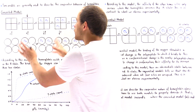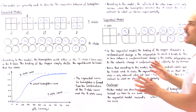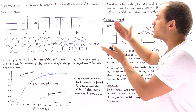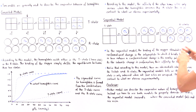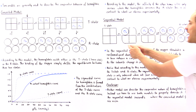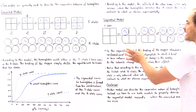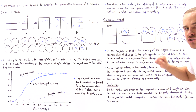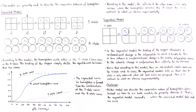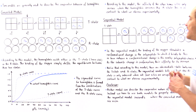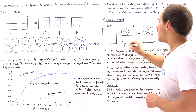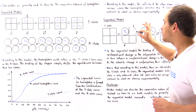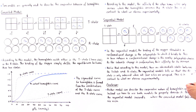The major difference between the concerted and sequential models is that in the concerted model we only have either the T state or the R state. But in the sequential model, we have the T state, the R state, and also three intermediates. The binding of oxygen stimulates a conformational change in that polypeptide, which in turn induces a conformational change in the nearby polypeptide chains, increasing the affinity of those heme groups for oxygen.